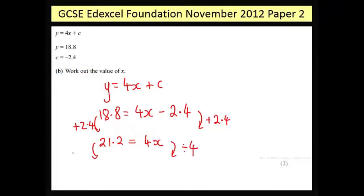So if you divide by 4 on both sides, you'll end up with x on this side, and 21.2 divided by 4 is 5.3. So the answer is x equals 5.3.